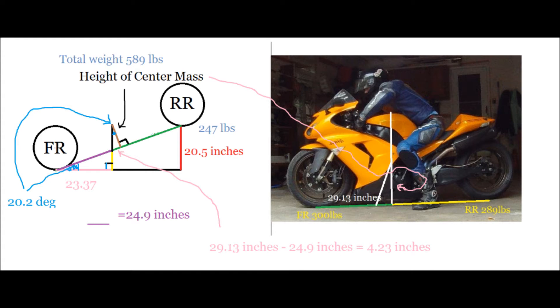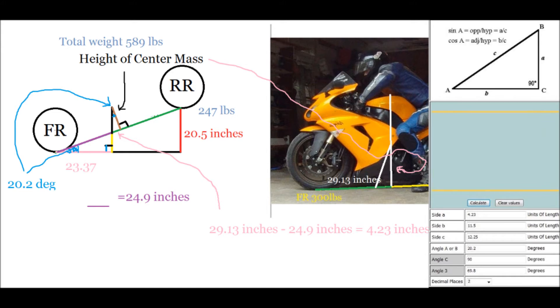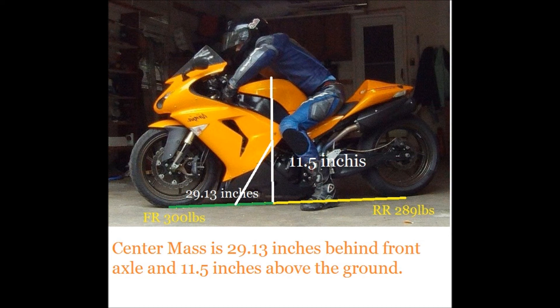So we got two lines and an angle, we can find out by using the calculator. Let's put the numbers in the calculator. We know side A which is 4.23 inches, we know angle A which is 20.2 degrees, and I think that's all we know. It'll give you side B which is 11.5 inches. Finally we get the answer. The center mass of the bike is 29.13 inches behind the front axle and it's 11.5 inches above the ground.